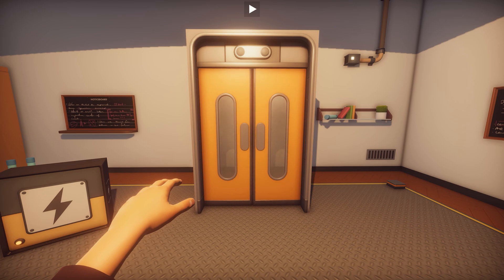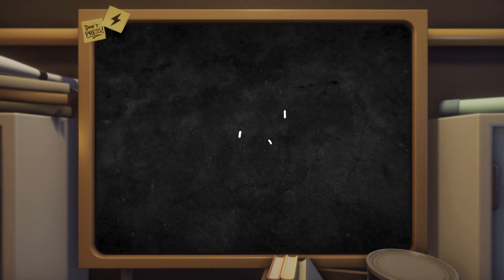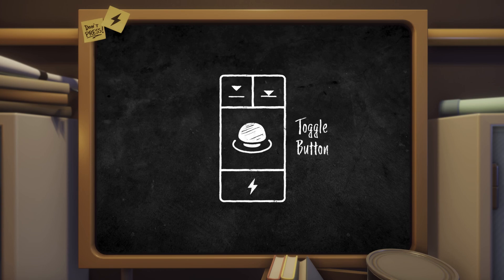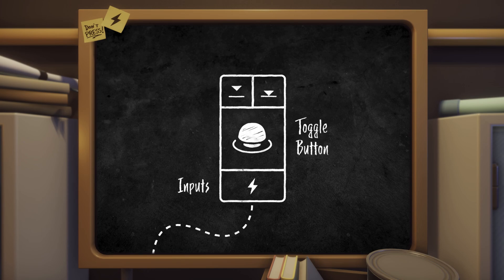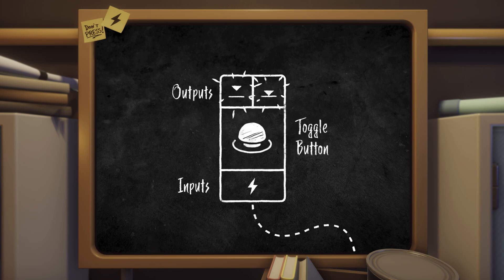Next we're going to hook up a button to the door. The button will stop the power reaching the door unless it's been pressed. But before that we need to talk about inputs and outputs. Props can have inputs and outputs which vary based on the prop's functionality. Inputs, which are always located along the bottom, accept power wires from other props. This toggle button accepts one input — the icon displayed is a power symbol, meaning power goes here. Note that only one power wire can connect to one input at any time; connecting a new wire will remove the original.